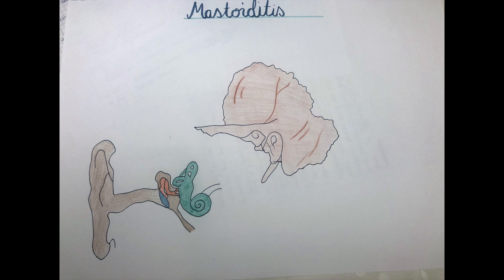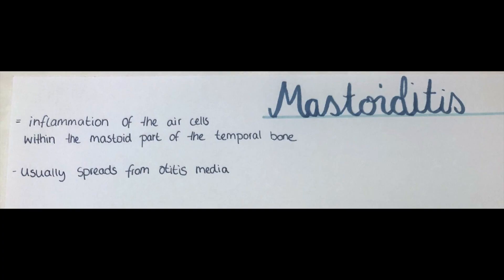A literal definition of mastoiditis would be when the mastoid air cells within the temporal bone become inflamed. However, the term is most frequently used when describing a bacterial infection of clinical relevance that spreads to the mucosal lining and the air cells that are located within the mastoid process of the temporal bone.